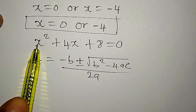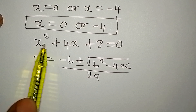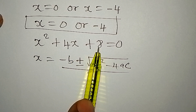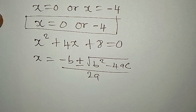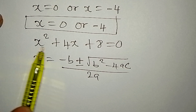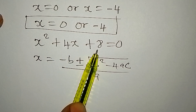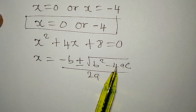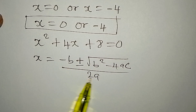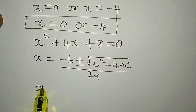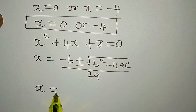Here, a, b, and c are the coefficients of x squared, x, and the constant term respectively. So from x squared plus 4x plus 8 equals zero, our a is 1, b is 4, and c is 8.